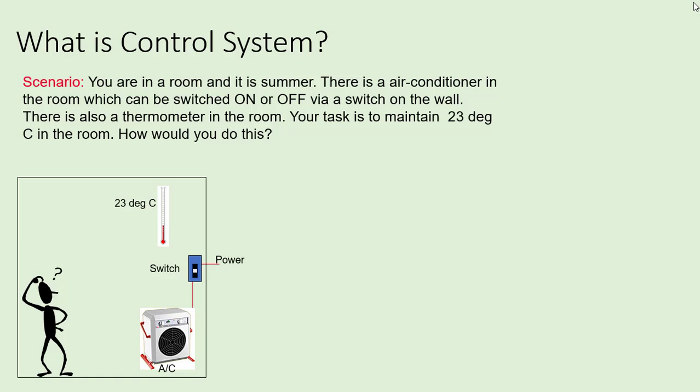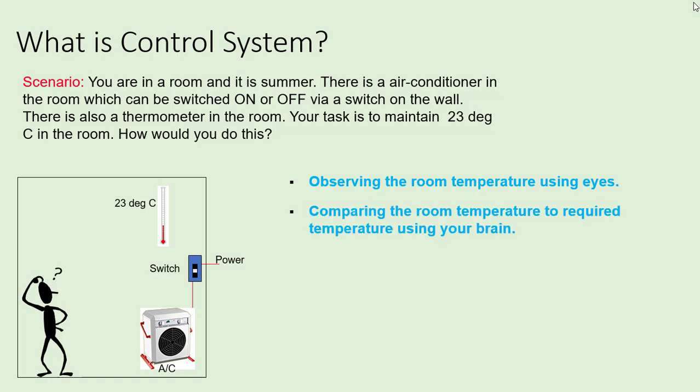How would you do this? You will observe the thermometer to notice room temperature. If room temperature is above 23 degrees Celsius, you will turn on the AC, and when the temperature goes below 23 degrees Celsius, you will turn off the AC. Basically, you are observing the room temperature, comparing it to the required temperature — this is known as decision making — and based on that you are taking action by turning the switch on or off.